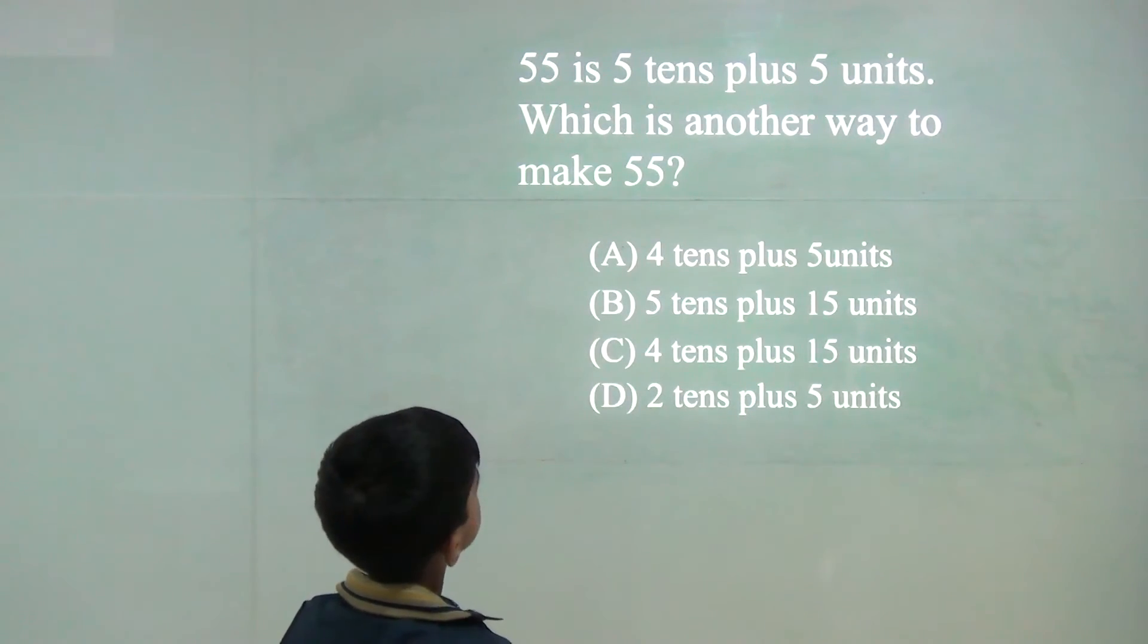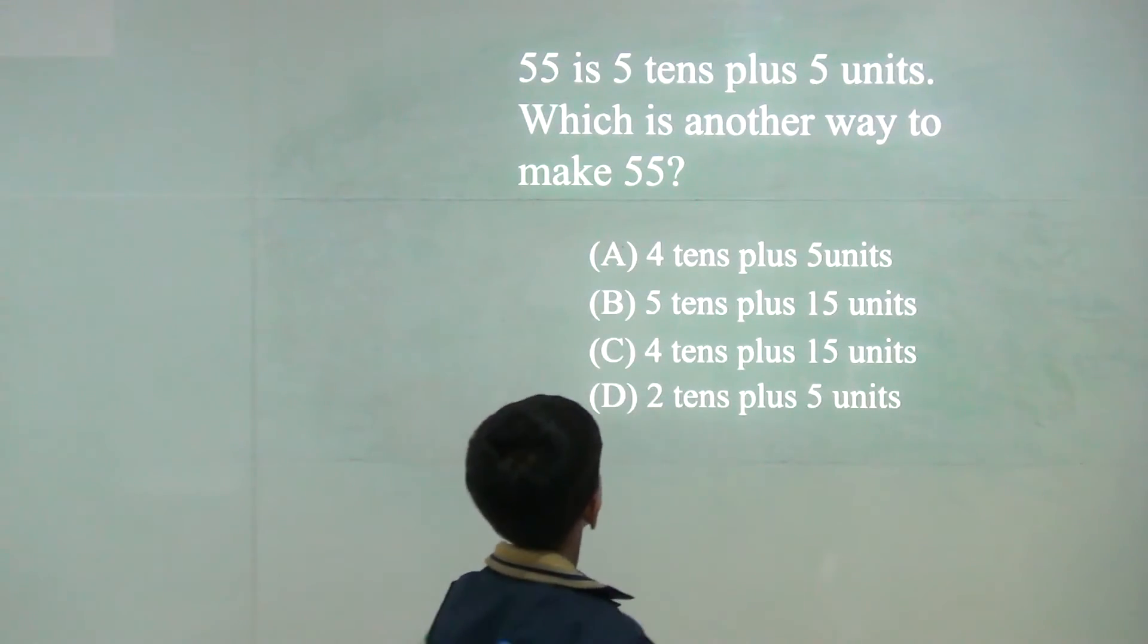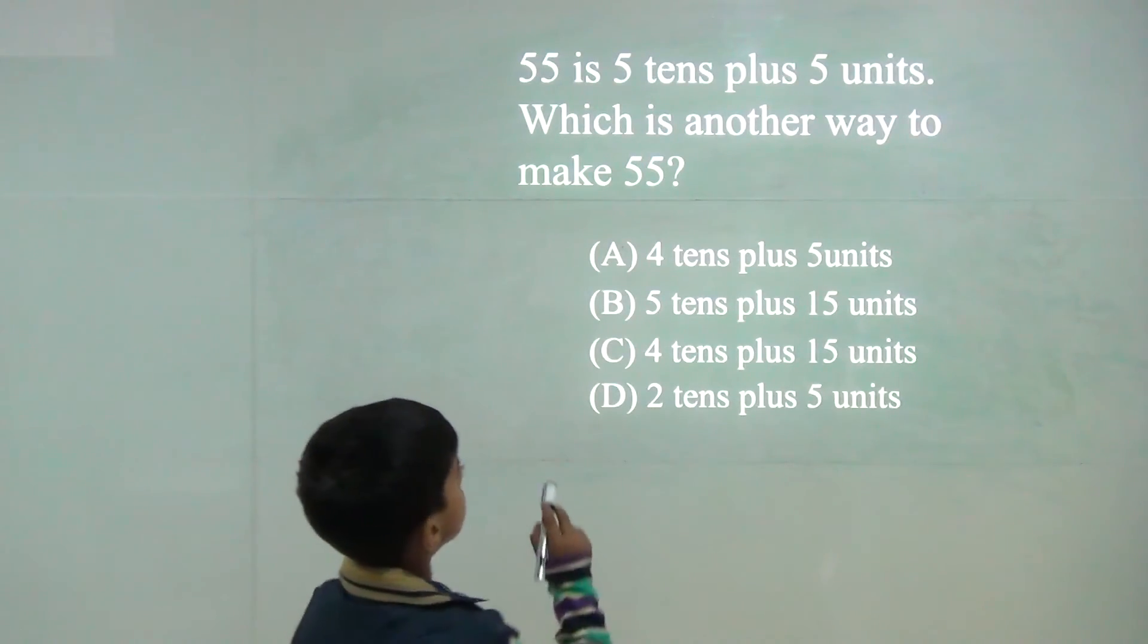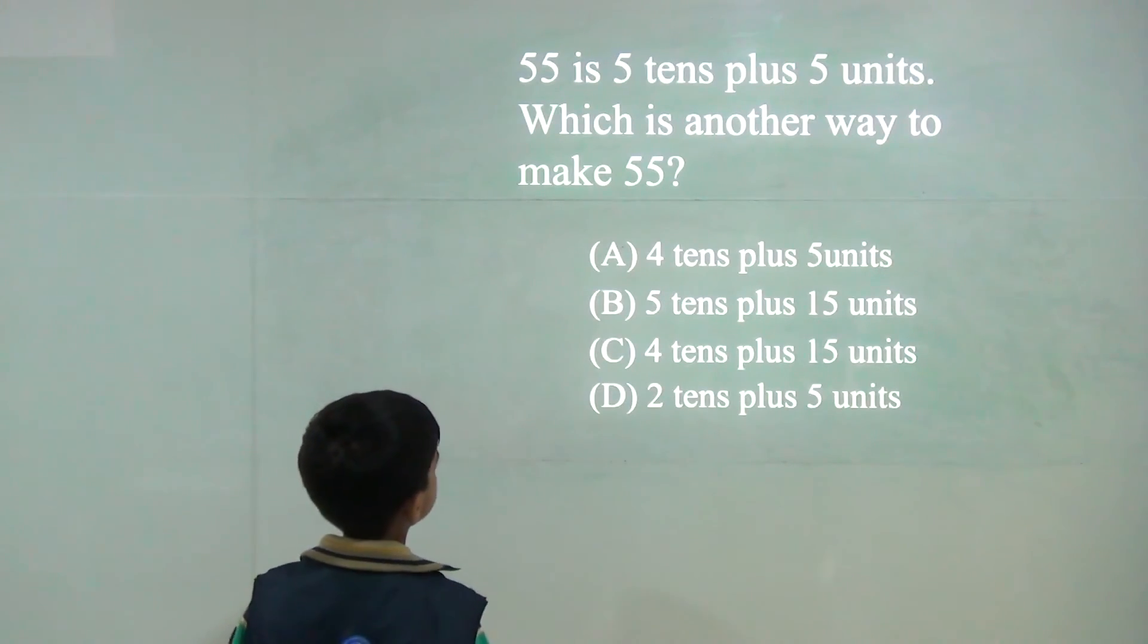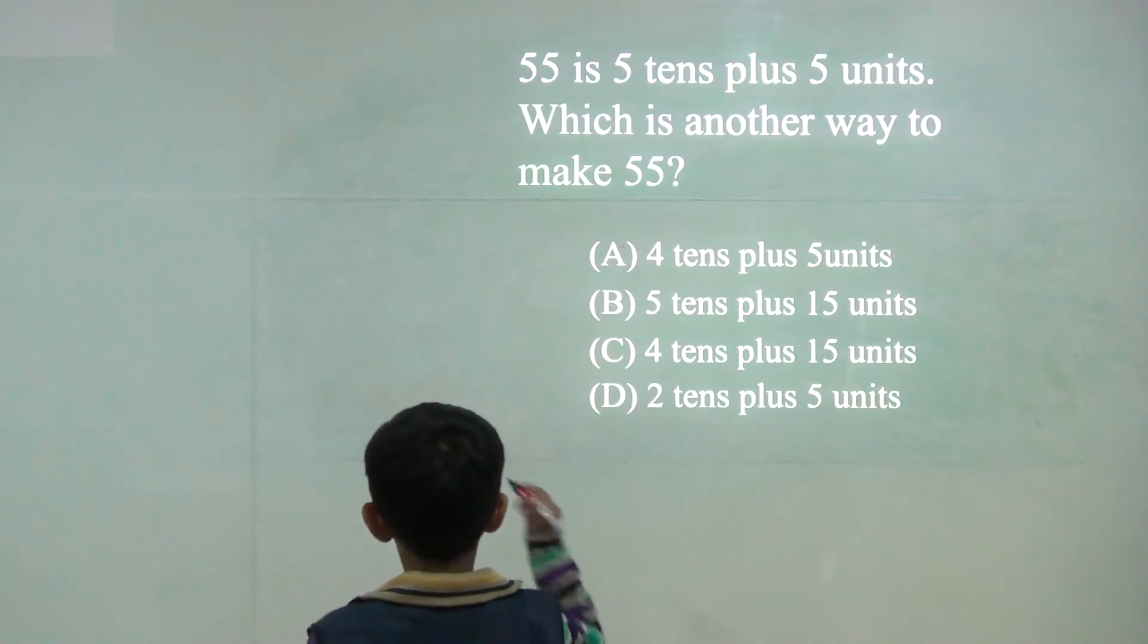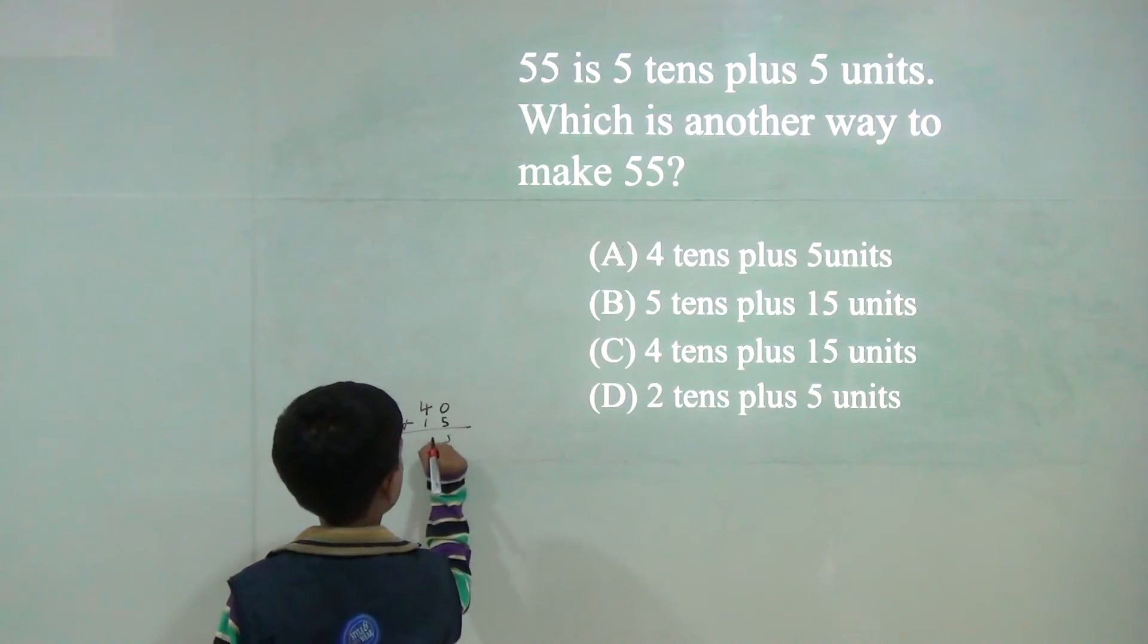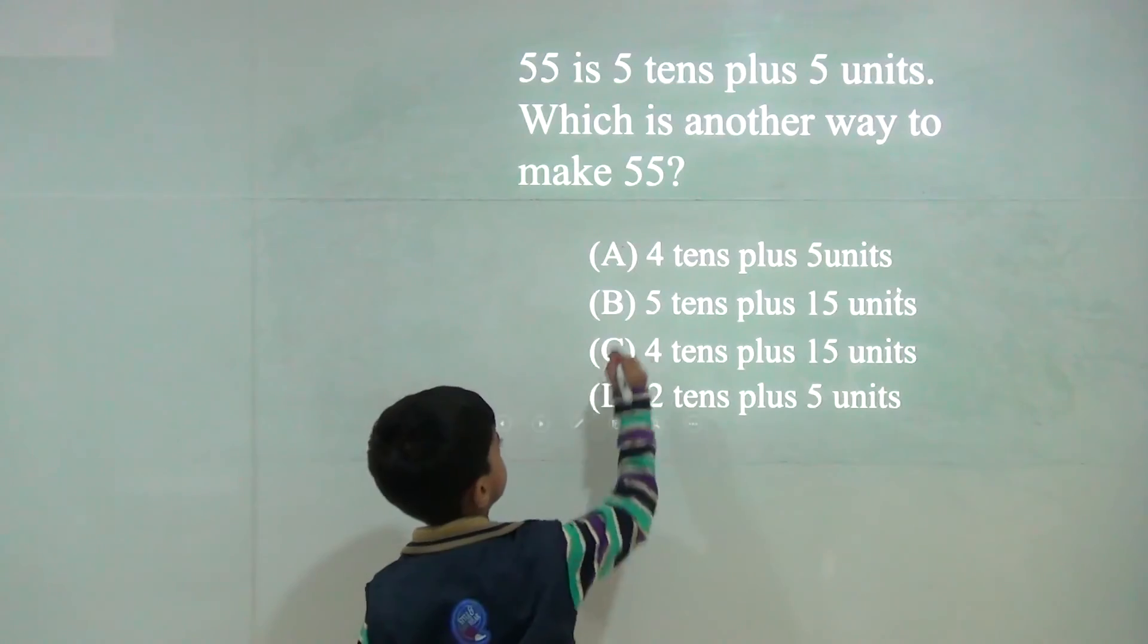55 is 5 tenths plus 5 tenths. Which is the number? 4 tenths plus 5 units. No. 5 tenths plus 15 units. No. 4 tenths plus 15 units. 4 tenths plus 15 units. 5 and 5. It can make. So answer would be C.